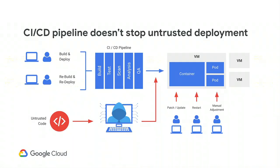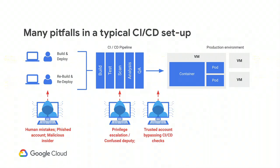Having a CI-CD pipeline does not stop untrusted code from being deployed. You can have a pipeline with scans and analysis enabled, but a privileged attacker — a developer making a mistake, a compromised account — can deploy code directly to production, bypassing all checks. If you don't lock down your production environment, admins and developers with direct access to running jobs create another vector of untracked changes. Even for those with a locked-down centralized CI-CD, there are many common pitfalls in the developer phase, CI-CD phase, and deploy stage.